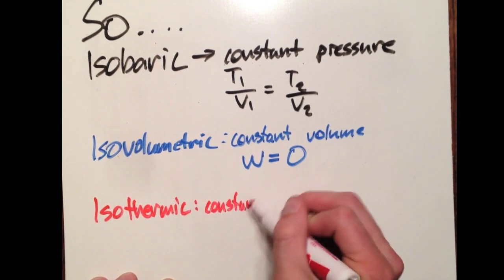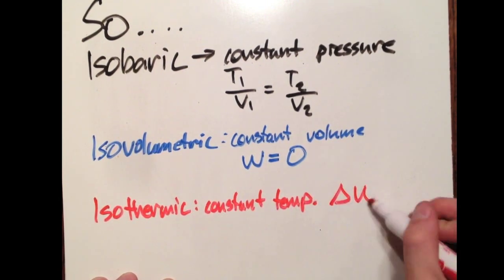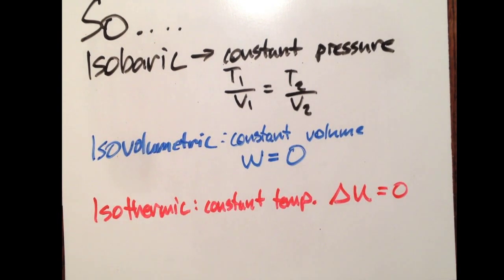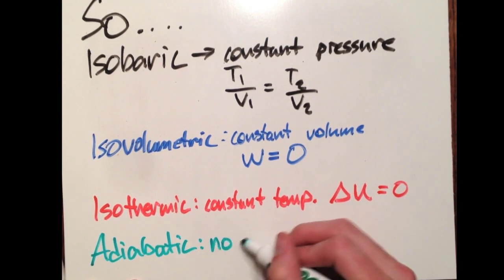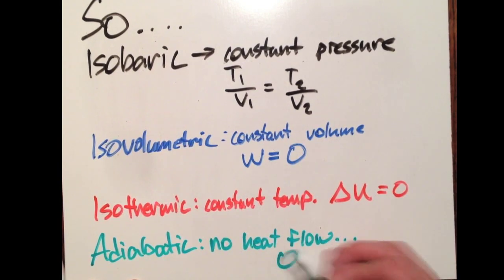Isothermal, constant temperature. Something important about an isothermal process is delta U is zero. Adiabatic, no heat exchanged. Therefore, Q has to be zero.